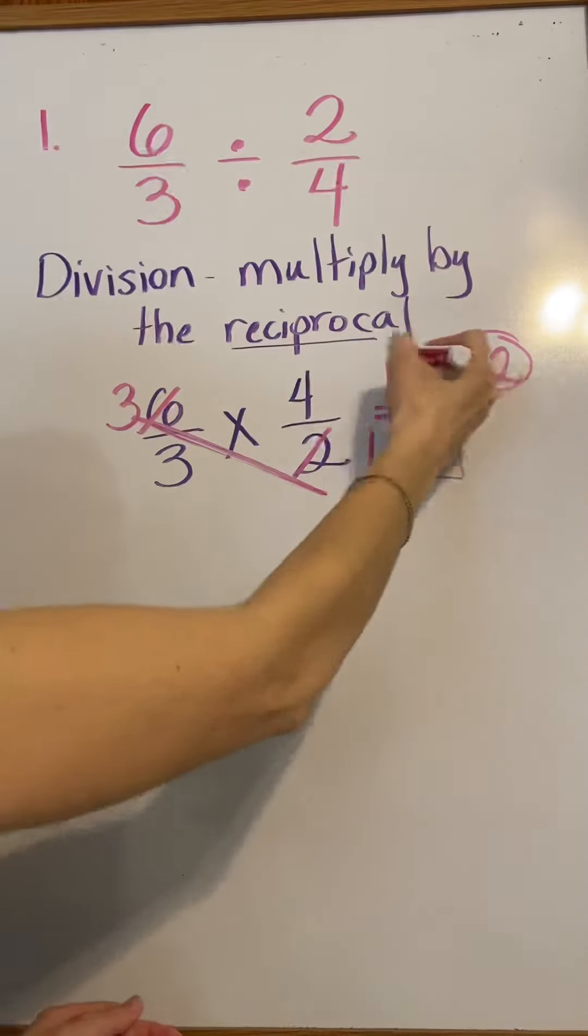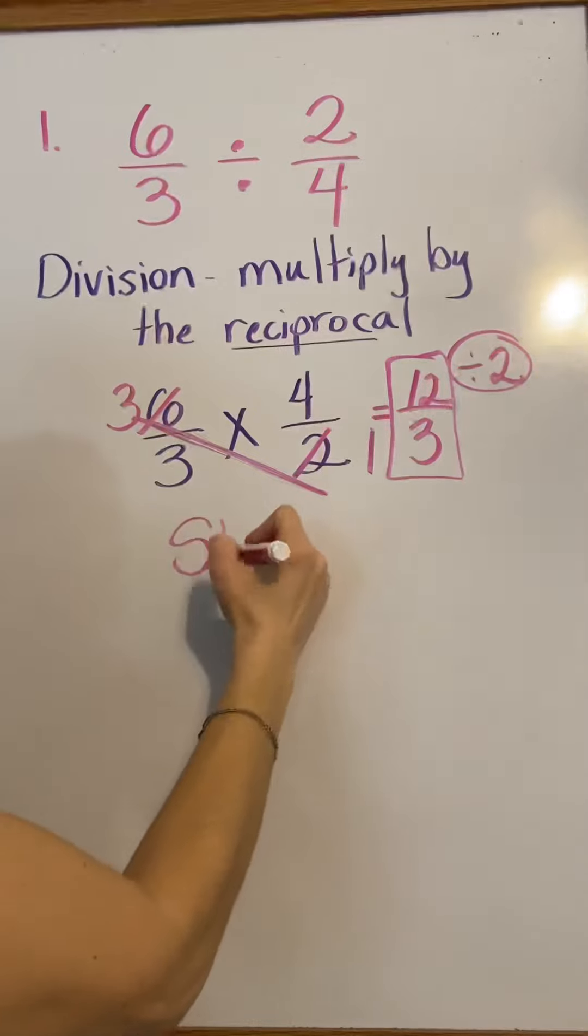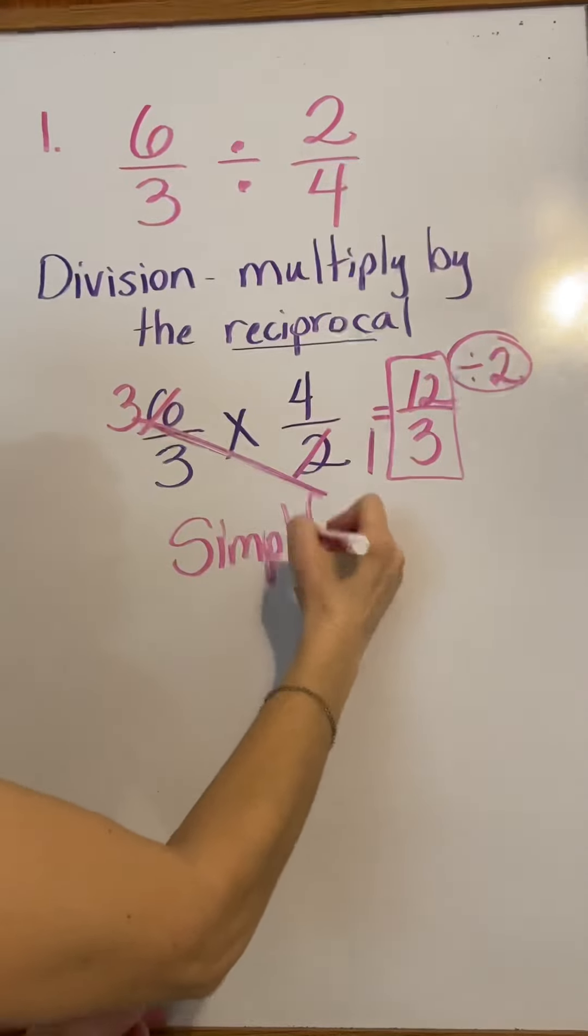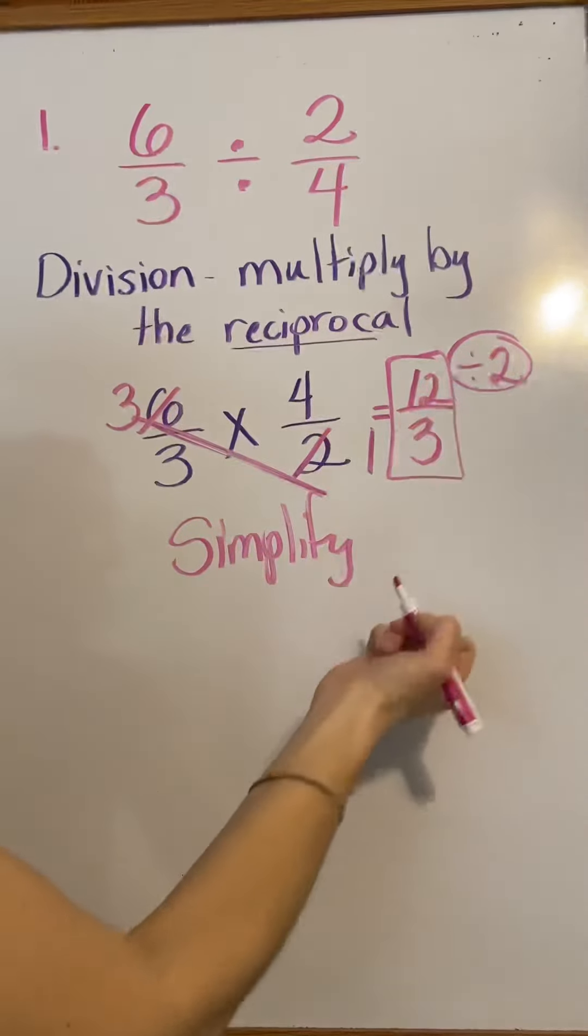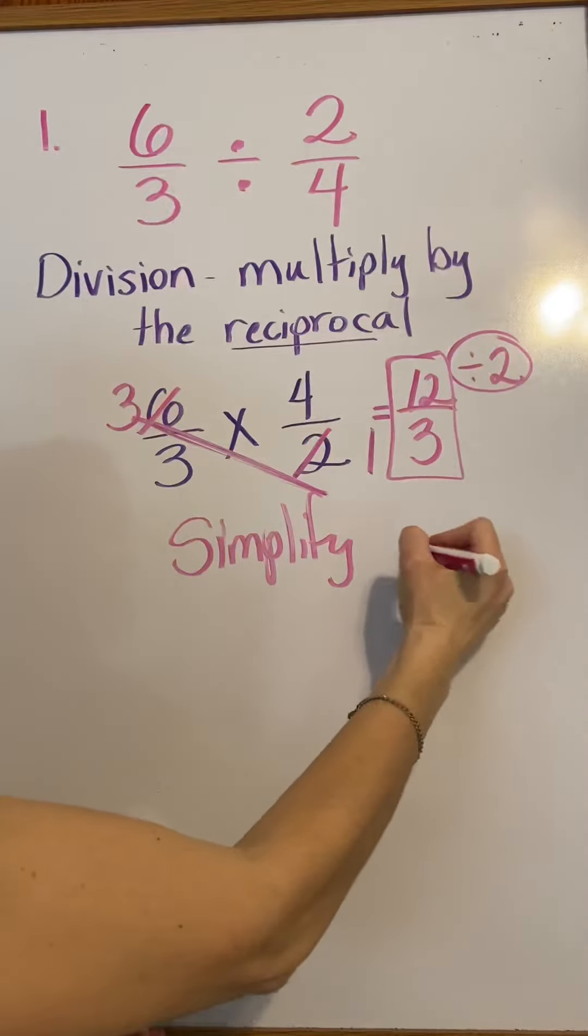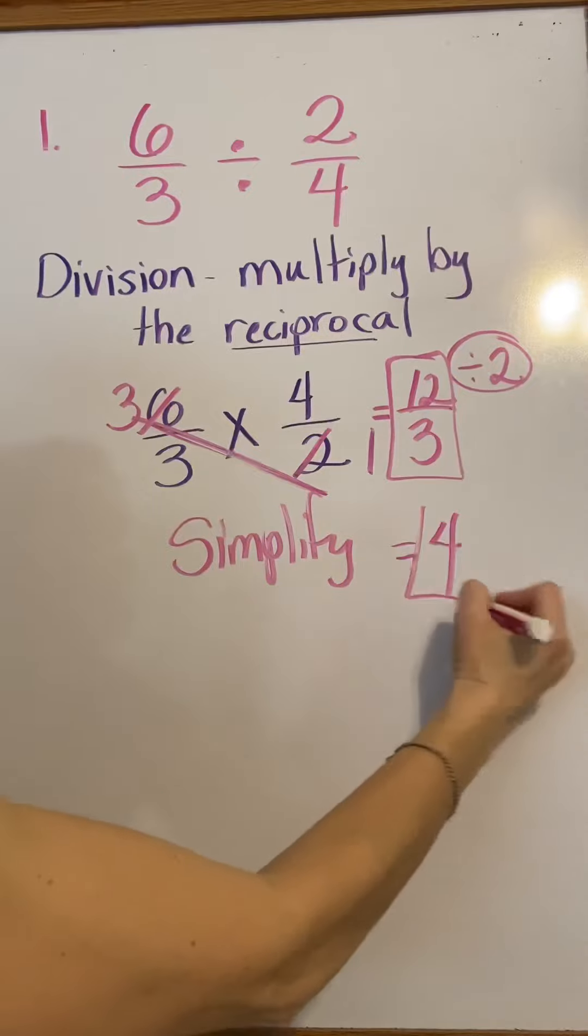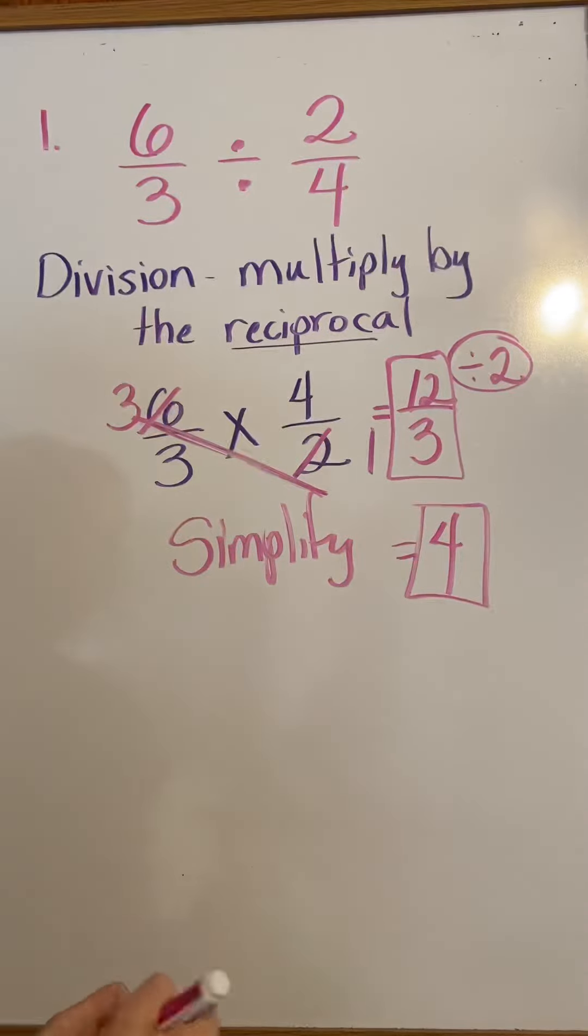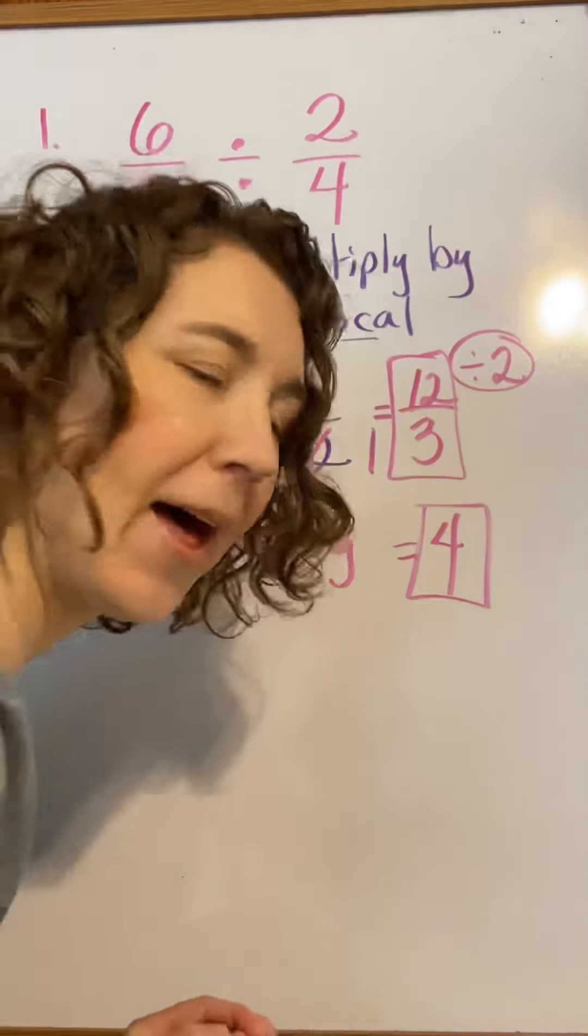But look, that can be simplified. We're going to simplify that. 12 over 3. 12 divided by 3 equals 4. So, 4 is your answer when you multiply those fractions.